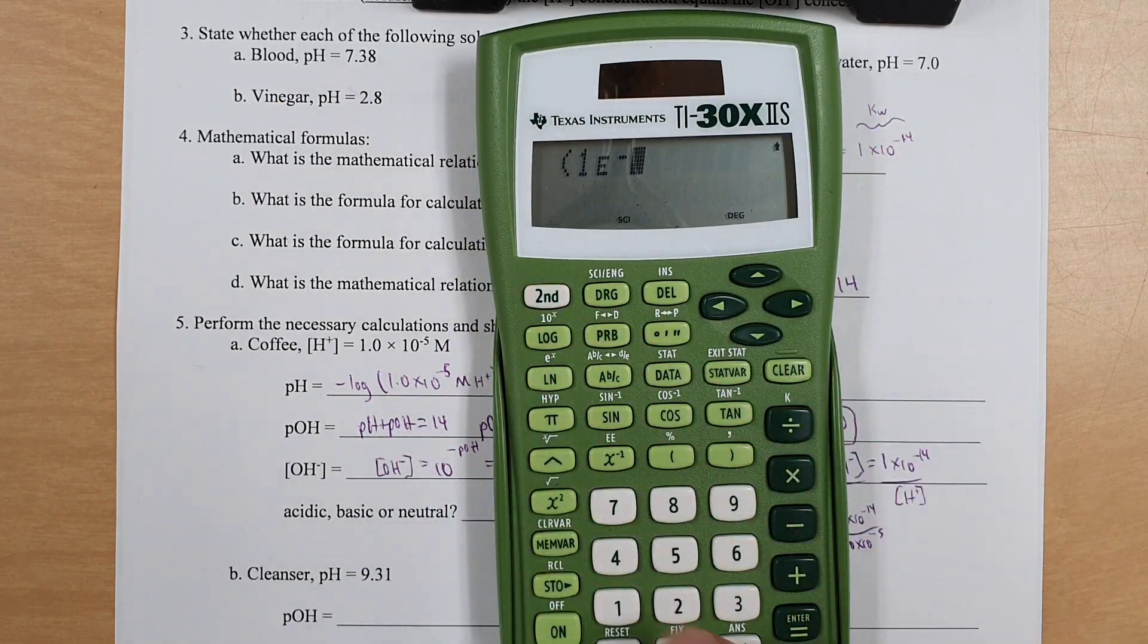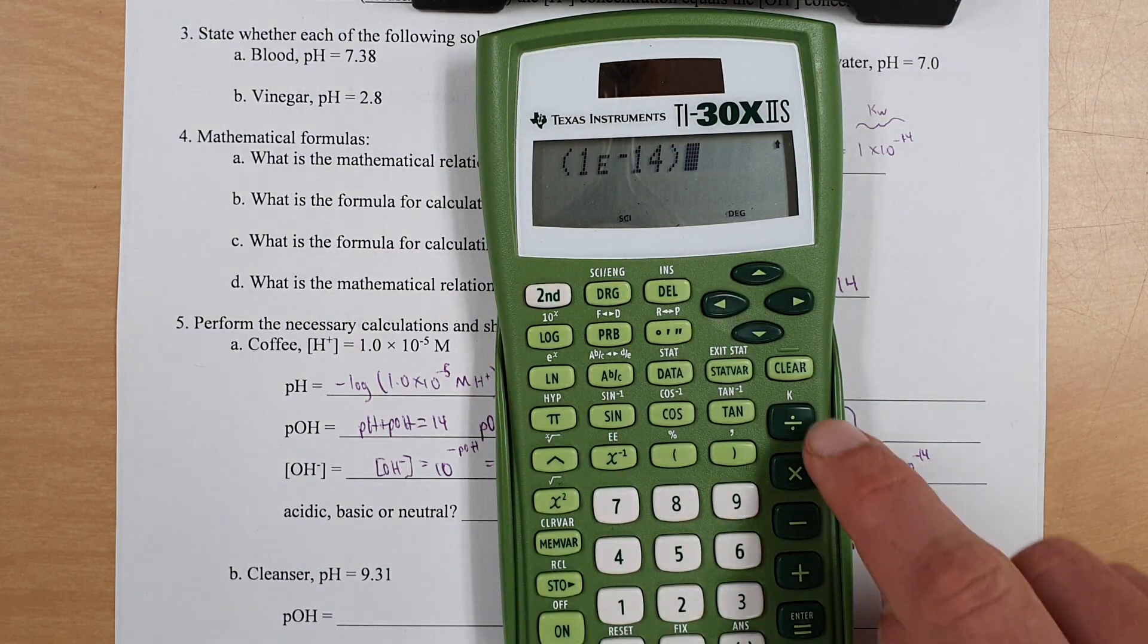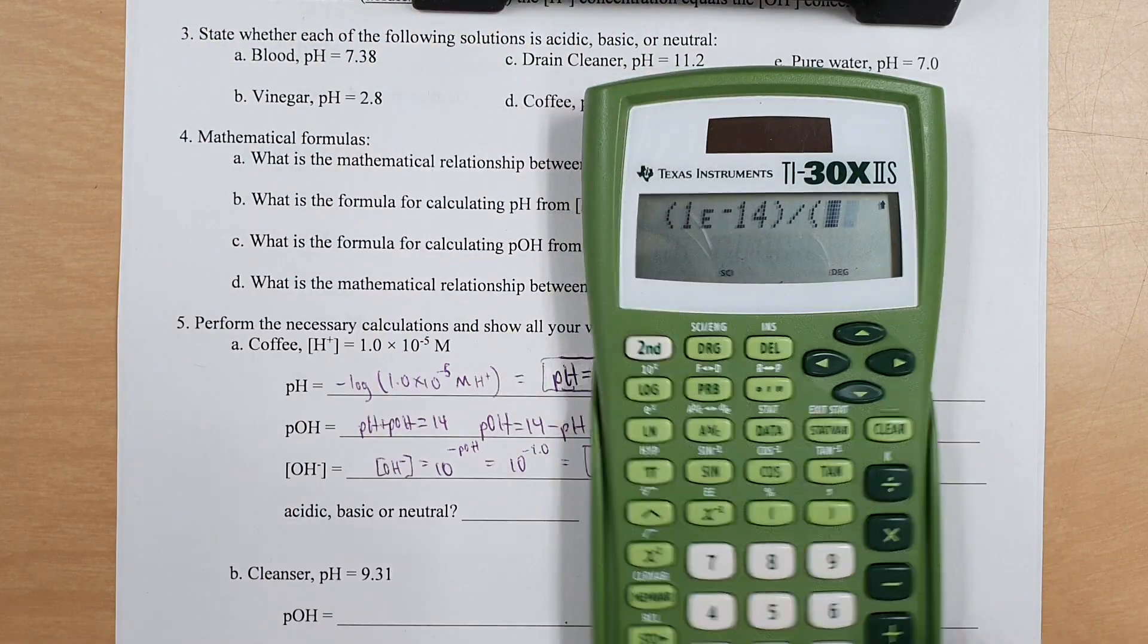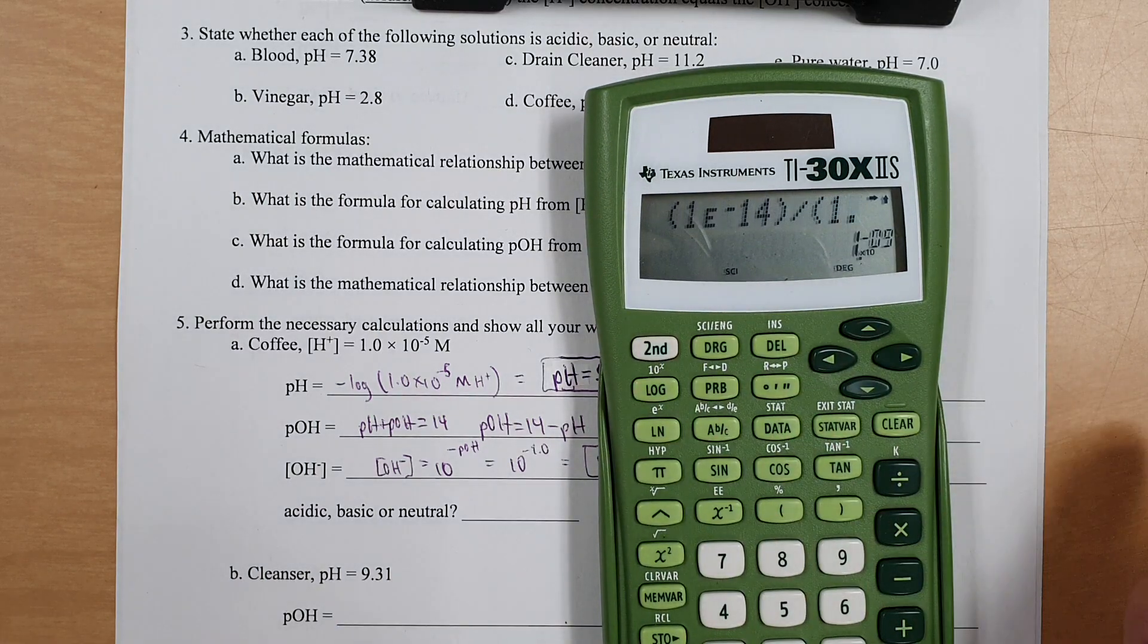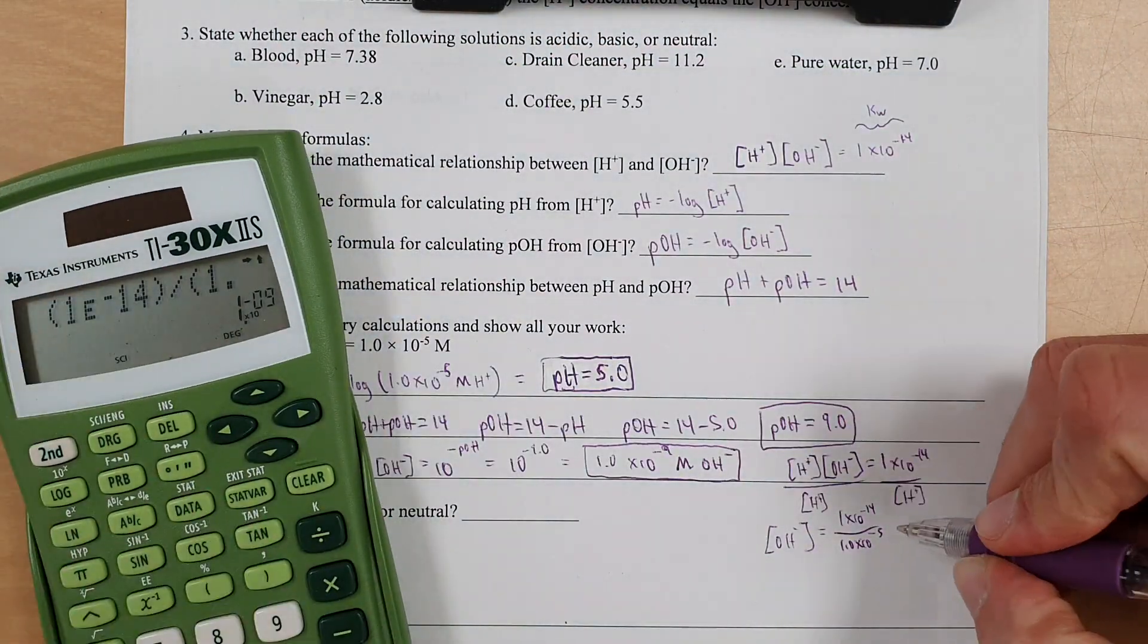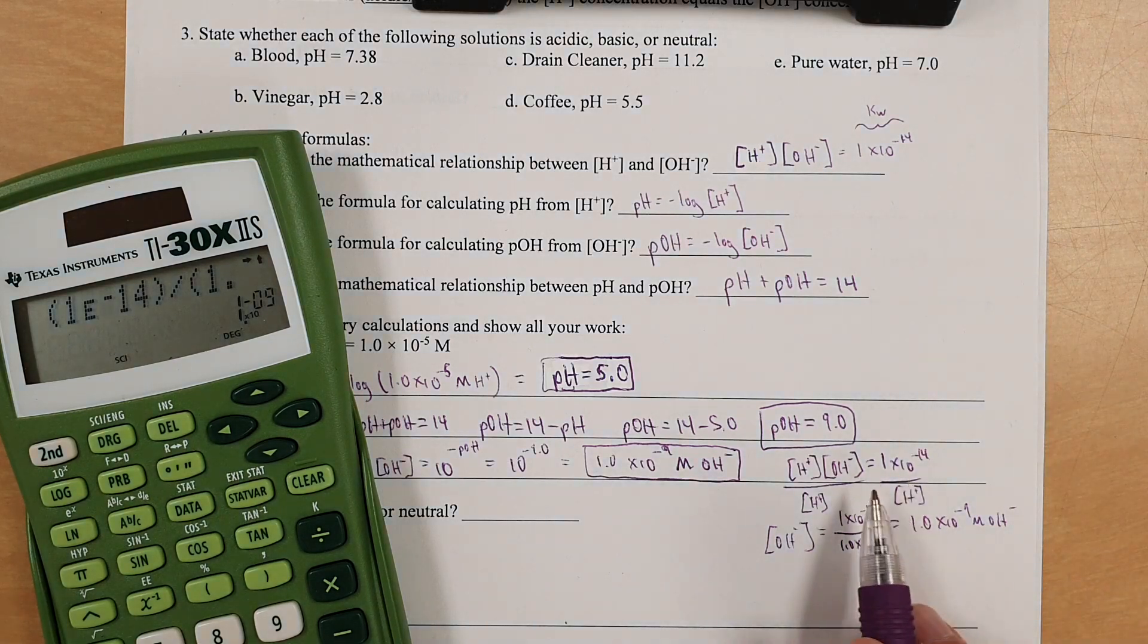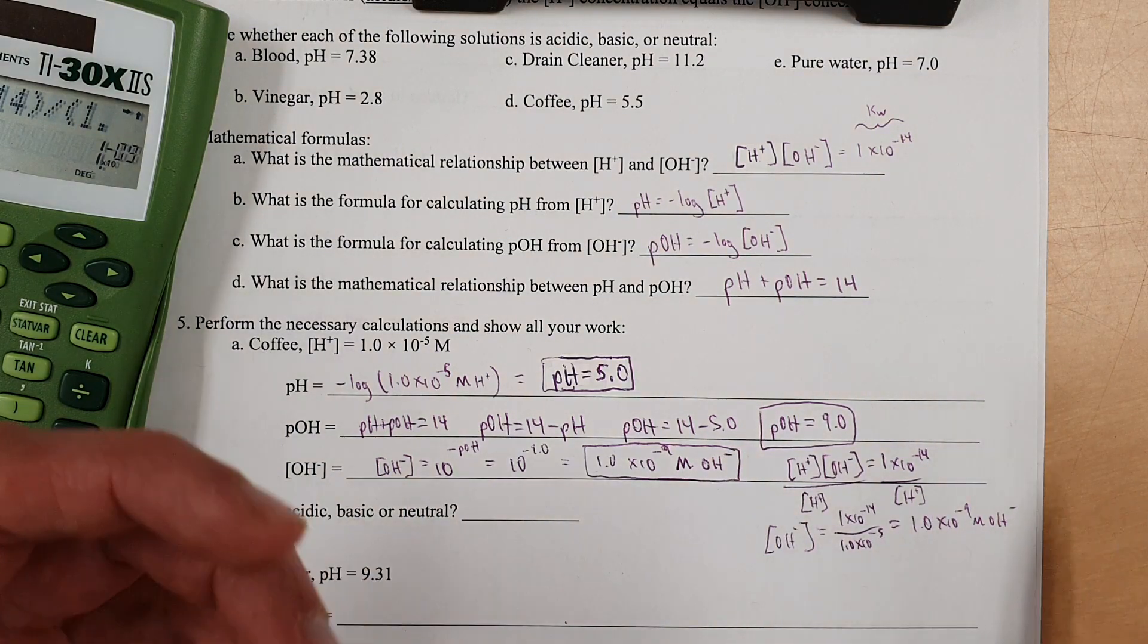1 times 10 to the negative 14th. Sorry, I didn't push the times button because you're not supposed to on this model for this particular task. But anyway, I digress. So 1 times 10 to the negative 14th divided by 1.0 times 10 to the negative fifth. And you get the exact same number we had before, 1 times 10 to the negative ninth. So you could have done this or this. No one cares. They're both valid. Gives you the same answer. All good.